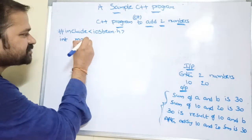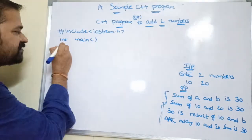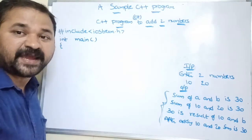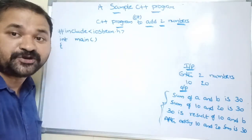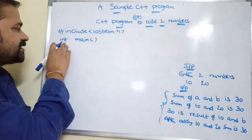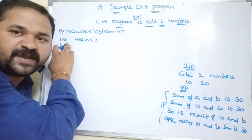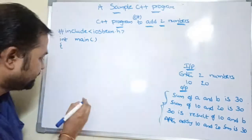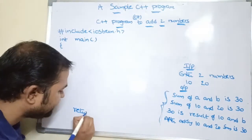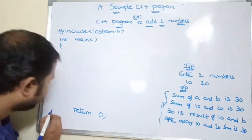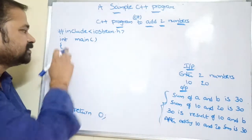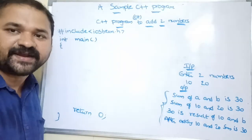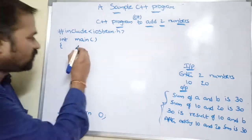Next is the main method. The return type of main is int because if a program is successfully compiled and executed, the main function returns a value of zero — and zero is an integer. So we declare the return type of main as int. The last statement of main will therefore be `return 0`. If you don't want to return any value, the return type would be void, since void doesn't return any value.